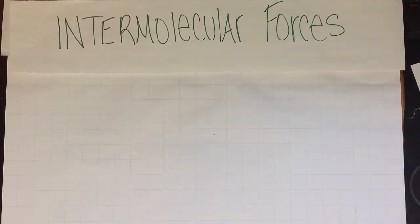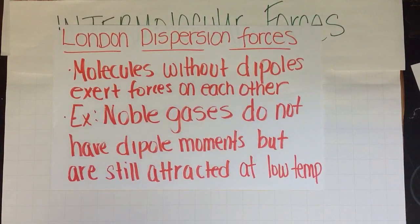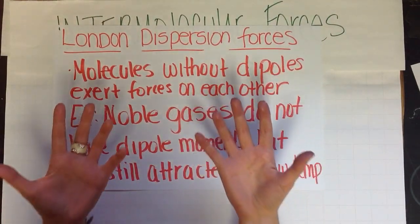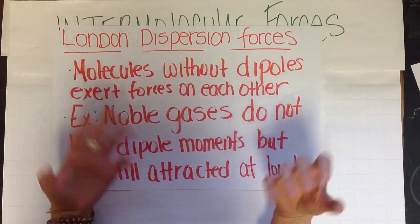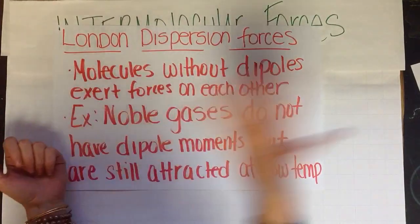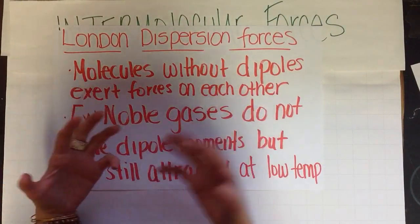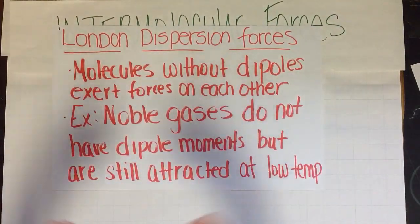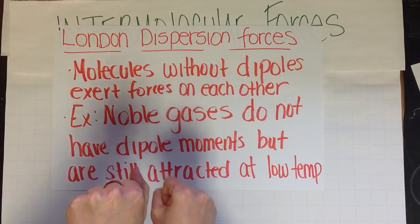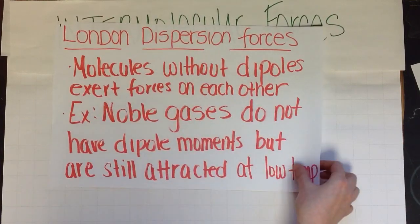The last type of intermolecular force is London dispersion forces, abbreviated as LDF. There are molecules that actually have no dipoles — we call them nonpolar molecules. These nonpolar molecules don't have positive and negative ends. But we know they're still attracted to each other. For example, noble gases don't have dipole moments — no positive and negative end. But noble gases still attract each other at low temperatures because they can form into liquids at low temperatures. So how do they get their intermolecular forces to connect if they don't have positive and negative ends? Kind of like a magnet — how does that happen?